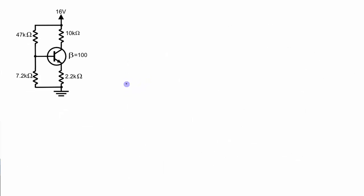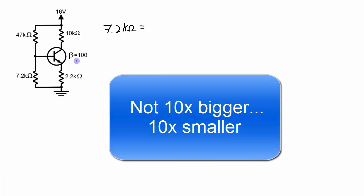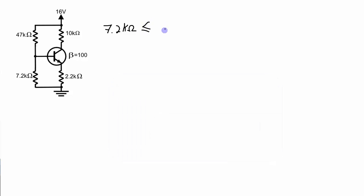Now I want to do analysis on the same circuit using the approximation method. In the approximation method we assume the base current is approximately zero. To make this approximation, the resistance seen looking into the base must be much bigger — at least 10 times more — than the resistance seen looking down the other path. That means the 7.2 kilohm resistor must be less than or equal to one tenth of beta plus 1 times the 2.2 kilohm resistor, which works out to 22.22 kilohms. Since that condition is true, I can make the approximation.